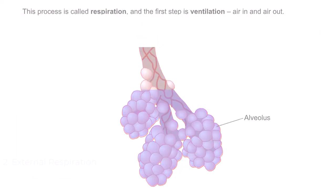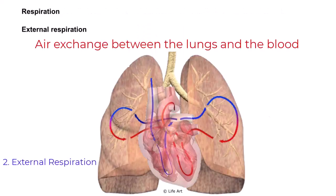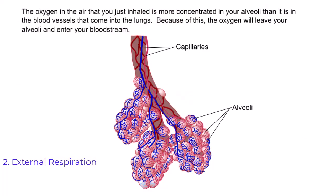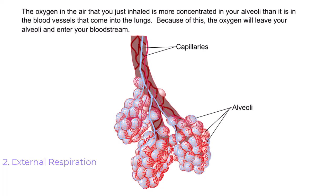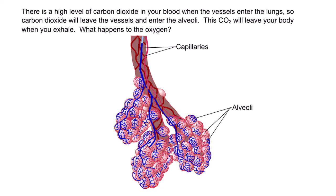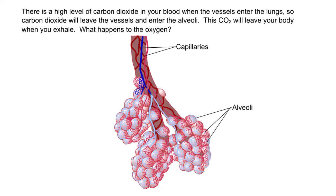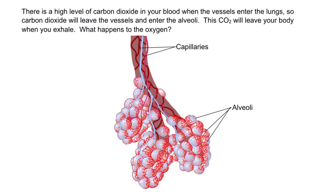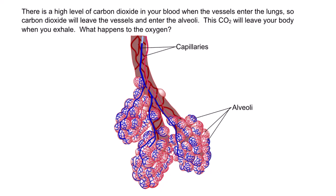Step two is external respiration — the air exchange between the lungs and the blood. Some of the air you just inhaled, now in the alveoli, will enter your bloodstream. The oxygen in the inhaled air is more concentrated in your alveoli than in the blood vessels entering the lungs, so oxygen leaves the alveoli and enters the bloodstream. Carbon dioxide, which is high in the blood entering the lungs, leaves the vessels and enters the alveoli to be exhaled from the body.